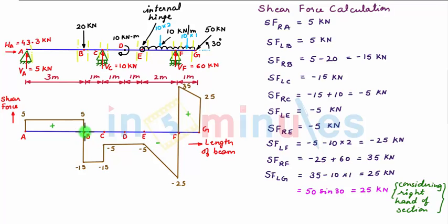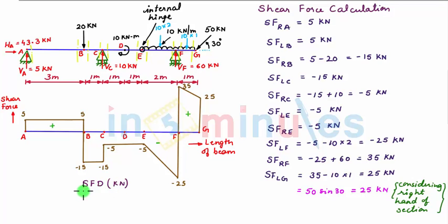At point B, shear force changes from positive value to negative value, so our positive bending moment will be maximum at point B. Whereas at point F, our shear force changes from negative value to positive value, so our negative bending moment will be maximum at point F. With this, our shear force diagram is complete. Let us now move towards bending moment calculation.